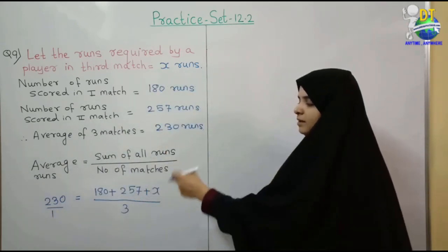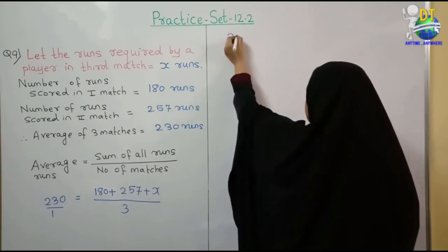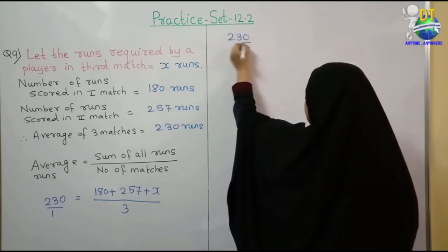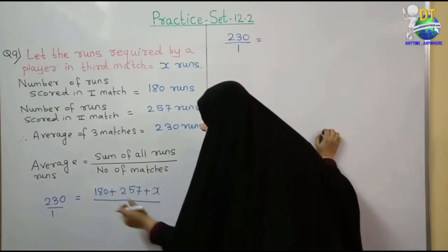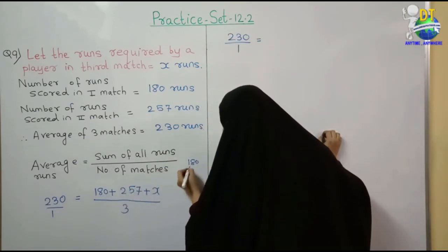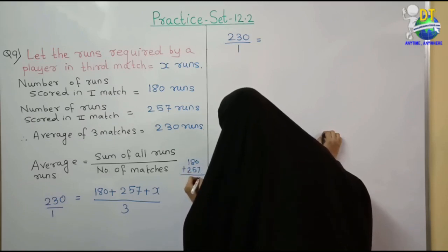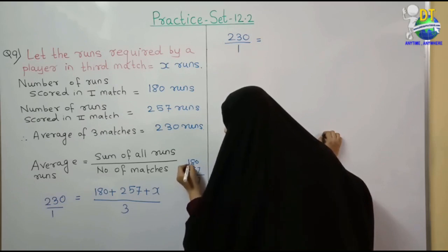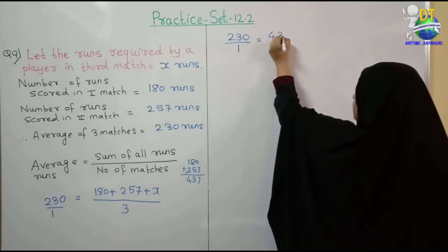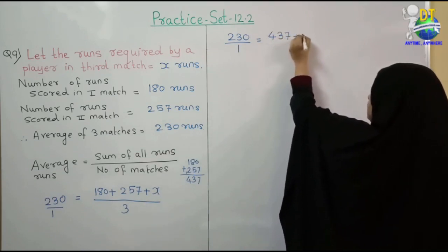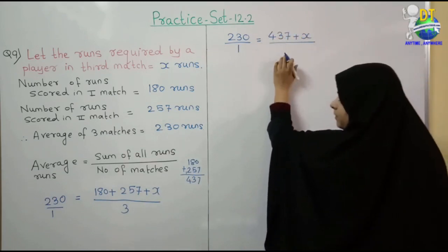a upon b — तो पहले ऐसे equation मिल गई. 230 upon 1 is equal to — इन दोनों का addition: 180 plus 257 — दोनों numbers हैं, addition हो सकता है. 7 and 5 is 12 carry, 8 and 5 and 1 is... 437 plus x, upon 3.